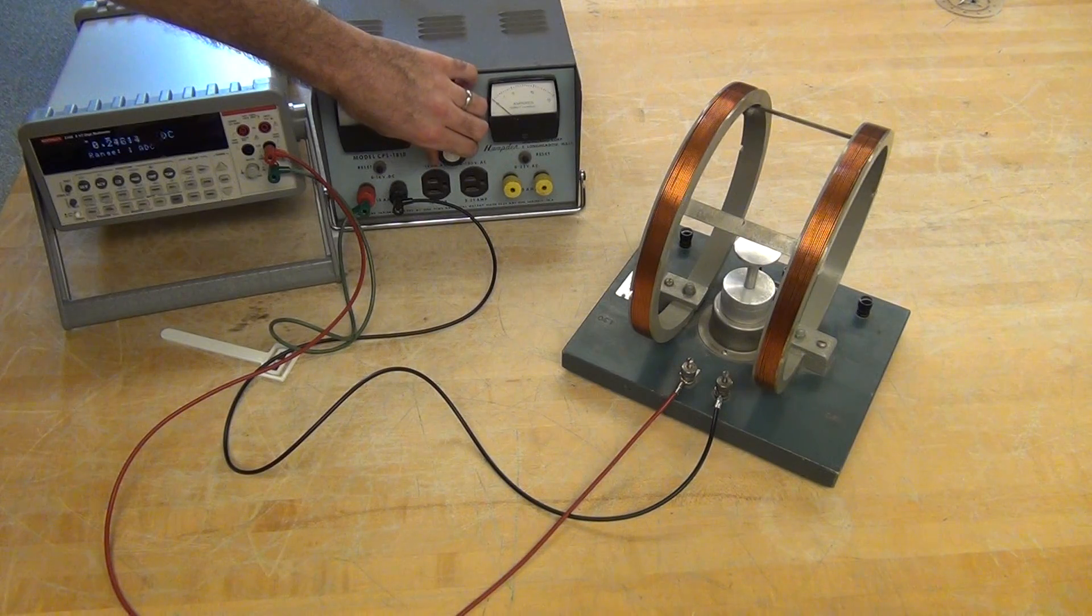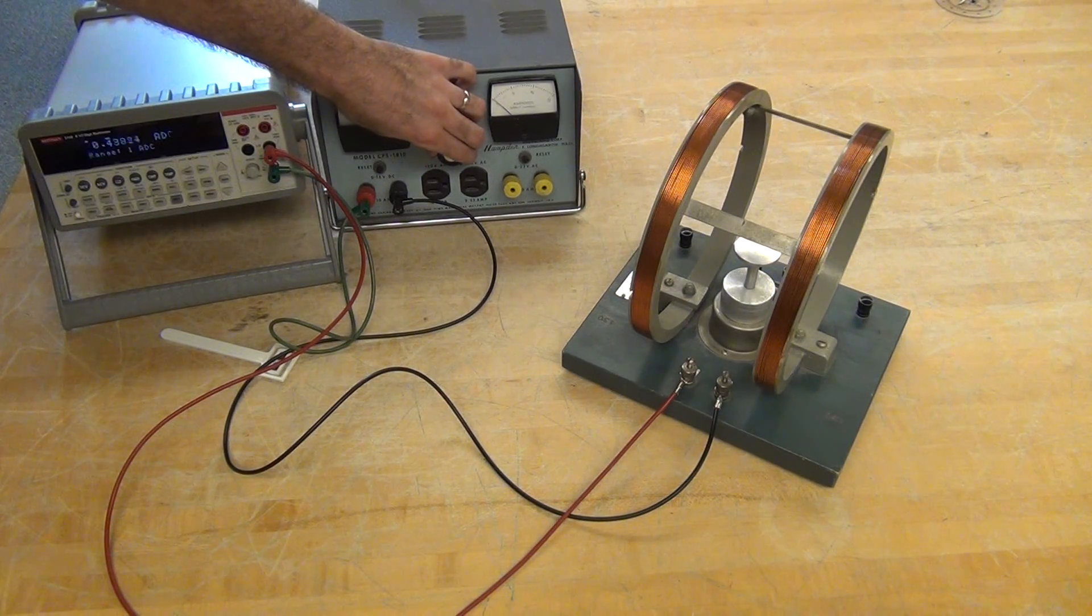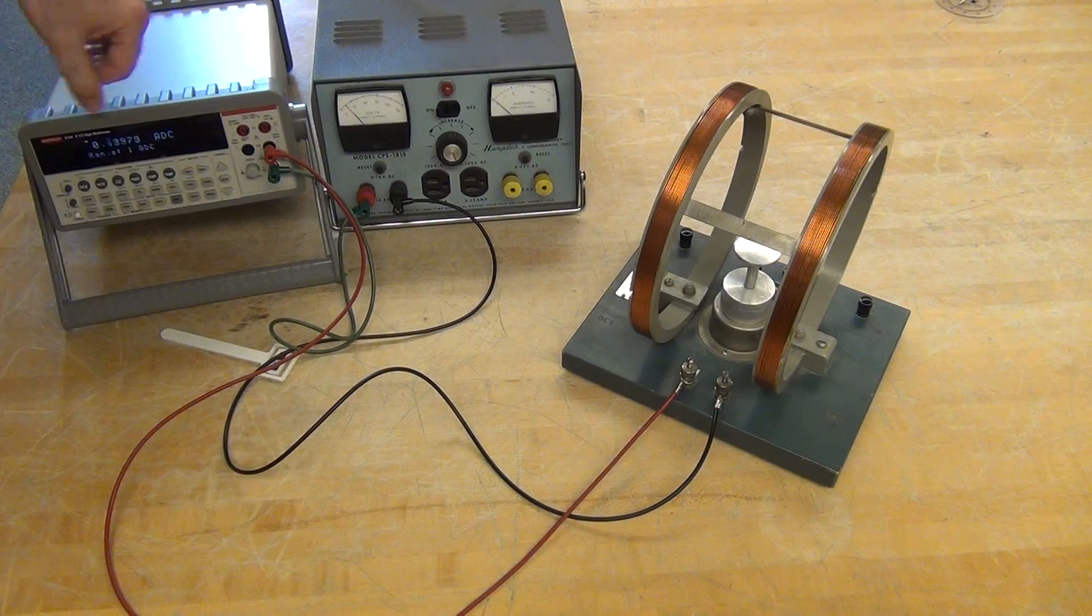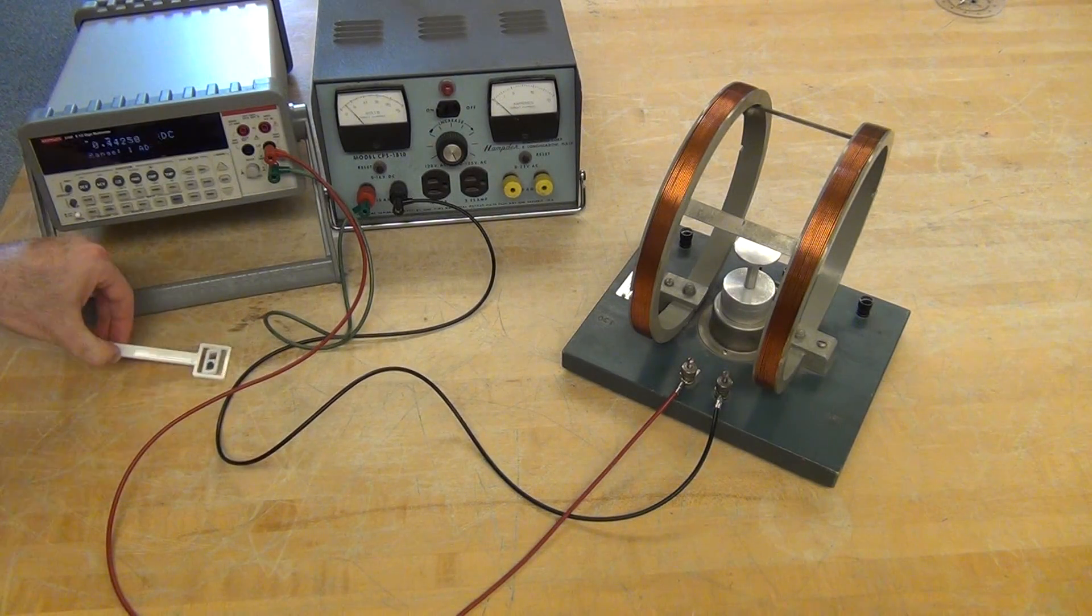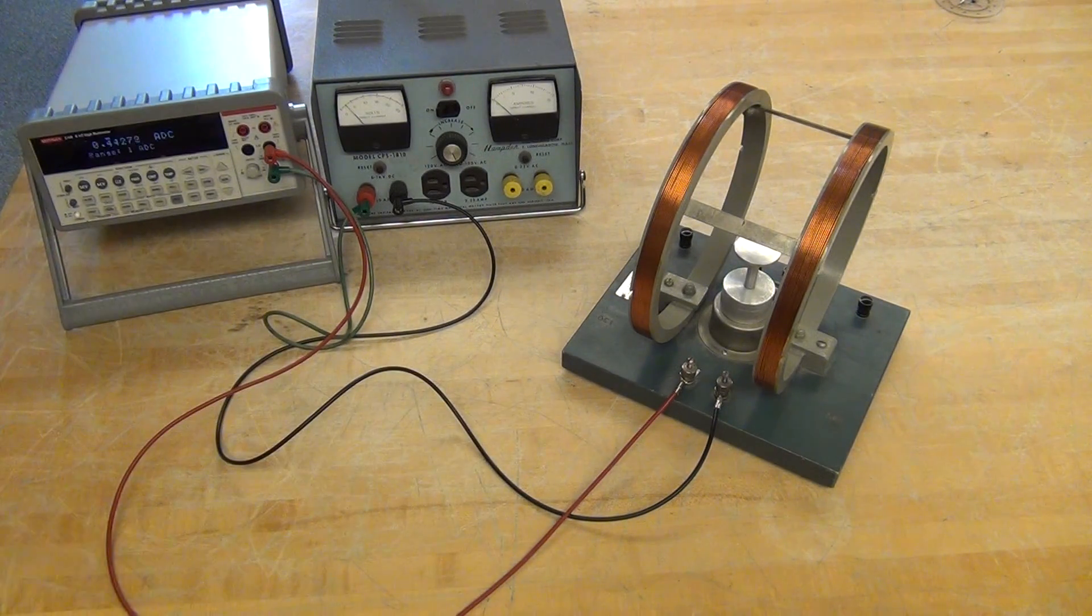Go to one amp DC maximum range until we have 0.4, 0.5, about half an amp running through our coil.